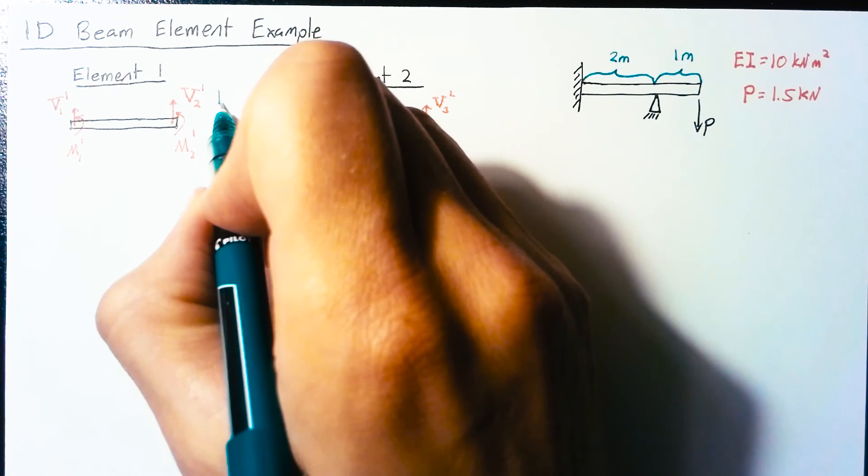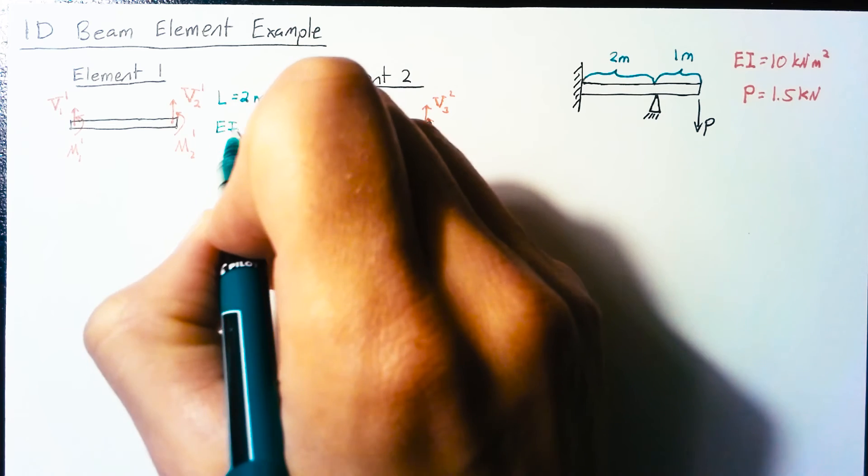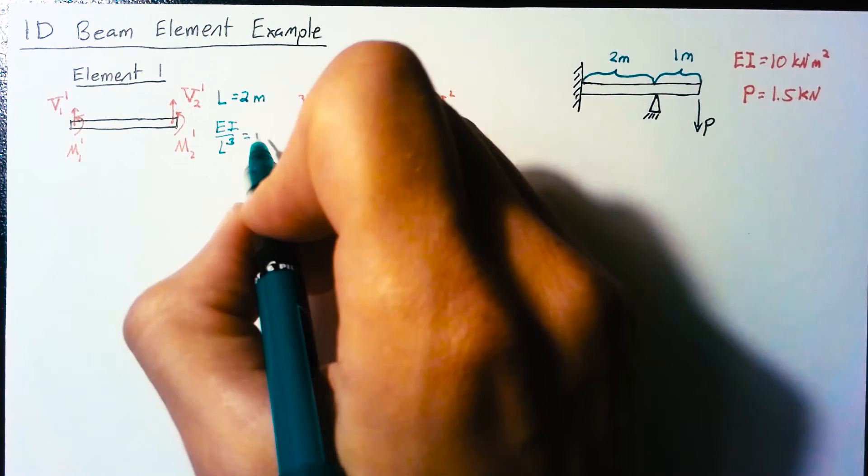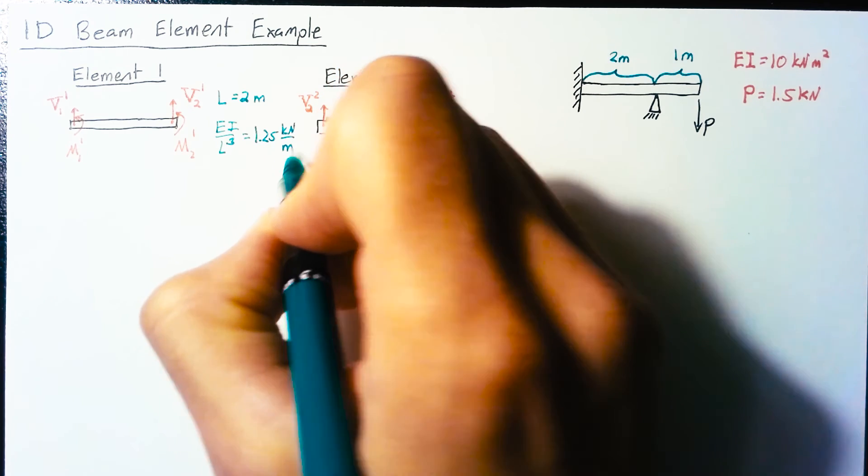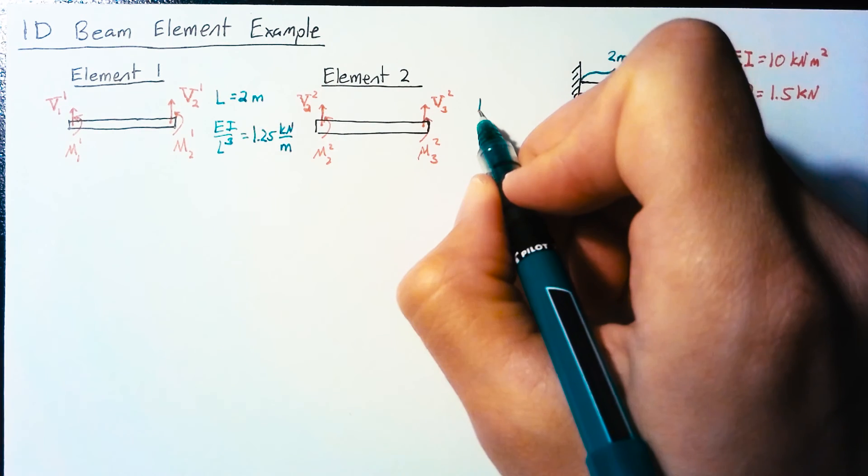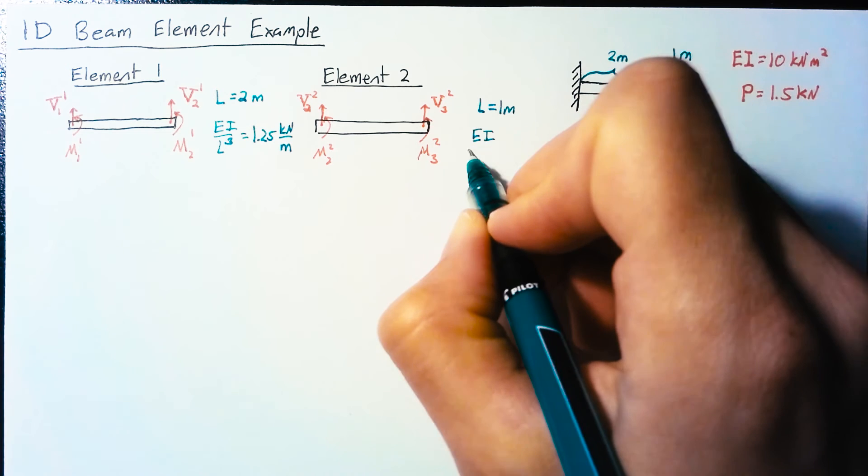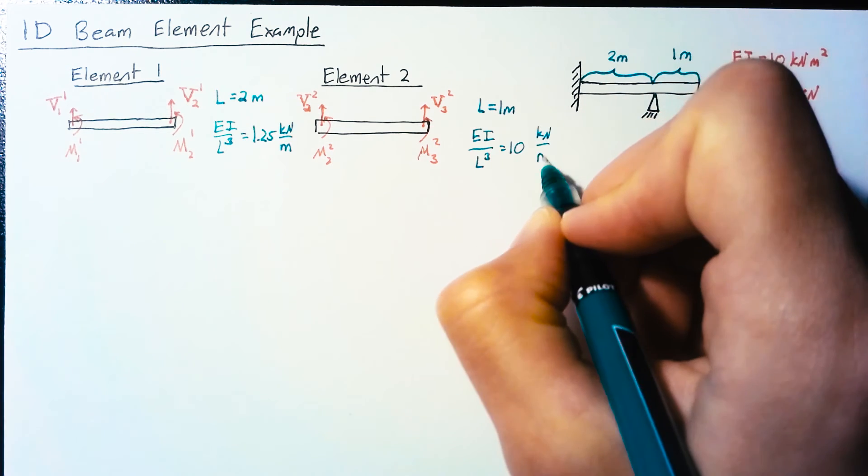With that in place, let's calculate the product EI over L³. For element one, L³ is 8 meters cubed so we get 1.25 kilonewtons per meter. For element two, L is 1 meter so EI over L³ is 10 kilonewtons per meter.